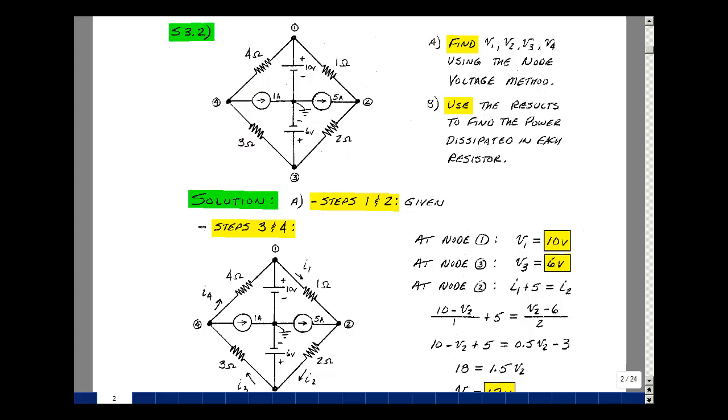In Electronotes, we had a five-step algorithm for finding node voltages. Steps 1 and 2 are to pick a ground and then label the node voltages, and that's already been done for us. Steps 3 and 4 are to apply Kirchhoff's current law and then solve for the node voltages.